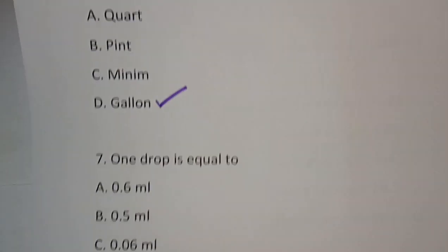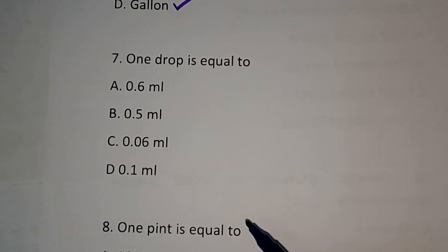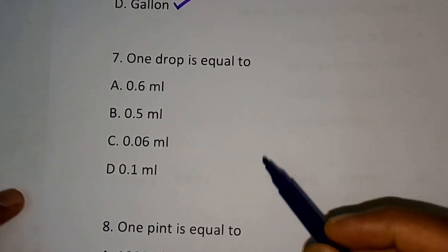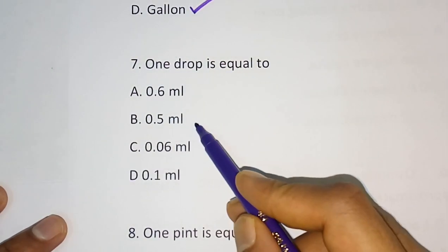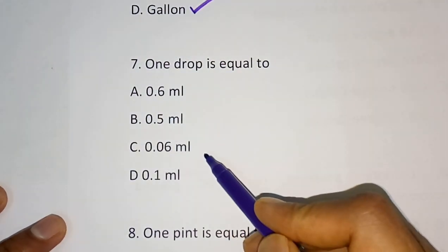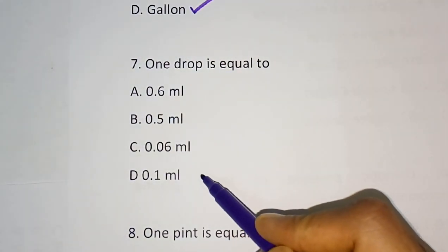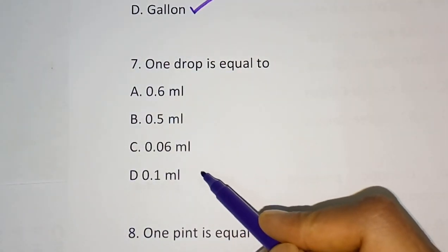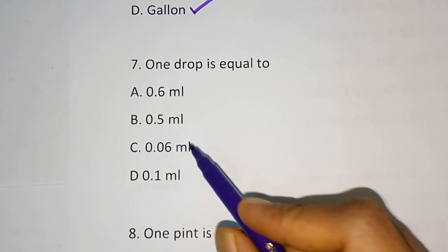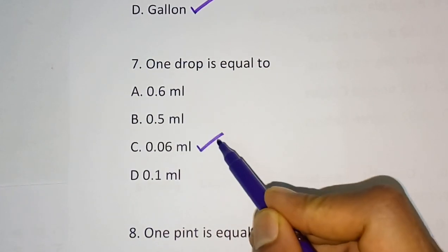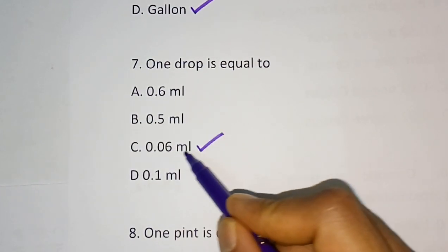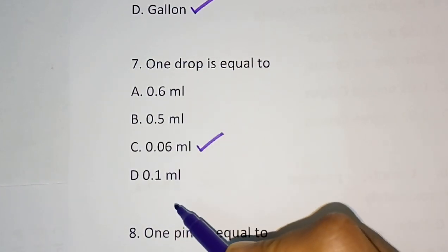Question number 7: 1 drop is equal to? Options are 0.6 ml, 0.5 ml, 0.06 ml, and 0.1 ml. The correct answer is option C — 0.06 ml.